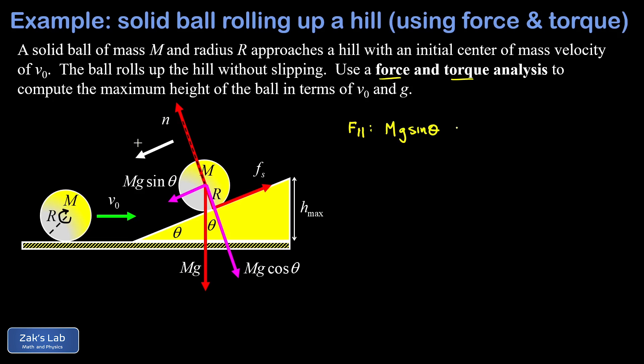So Mg sinθ, that's the positive parallel force on this ball, minus this unknown friction force fs is equal to the mass of the ball times the acceleration of its center of mass.